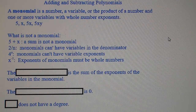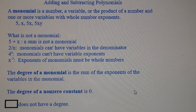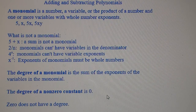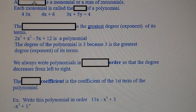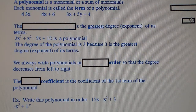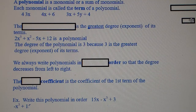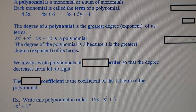Exponents of monomials must be whole numbers — meaning 0, 1, 2, 3, 4, 5, 6, 7, 8 — all positive numbers including zero. x to the negative 1 is not a monomial for this reason. The degree of a monomial is the sum of the exponents of the variables in a monomial. The degree of a non-zero constant is 0. Zero does not have a degree. A polynomial is a monomial or a sum of monomials.